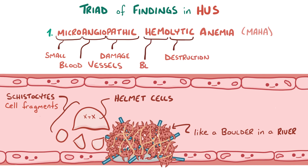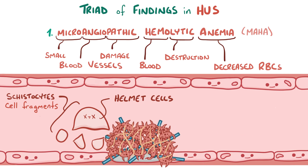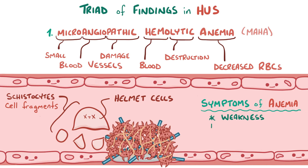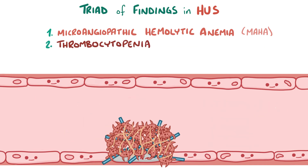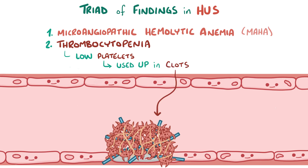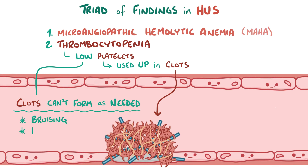Ultimately, this destruction of red blood cells leads to a decreased number of normal functioning red blood cells in the blood, also known as hemolytic anemia. This results in the usual symptoms of anemia like weakness, fatigue, and lethargy, but can also cause jaundice due to the red blood cell destruction. The thrombocytopenia, or low number of platelets, results from them getting used up in clot formation, meaning clots can't form when needed, which causes easy bruising and purpura — bleeding into the skin.